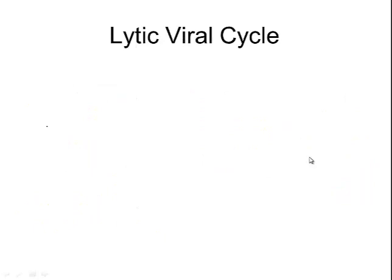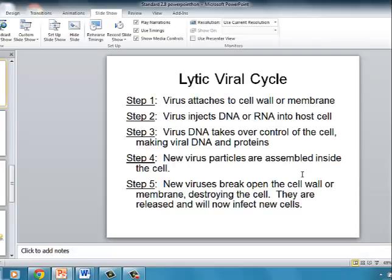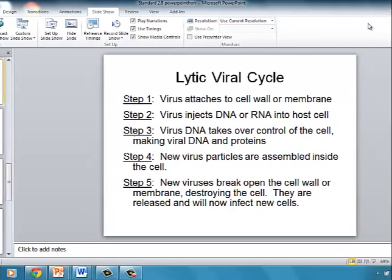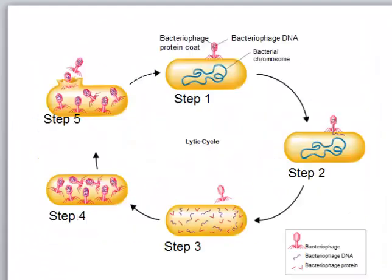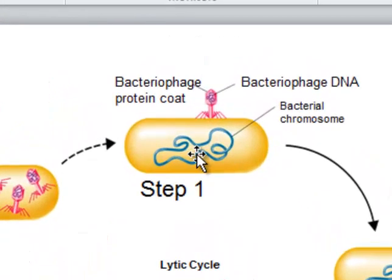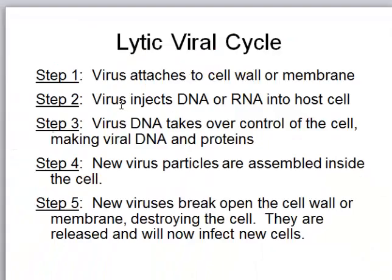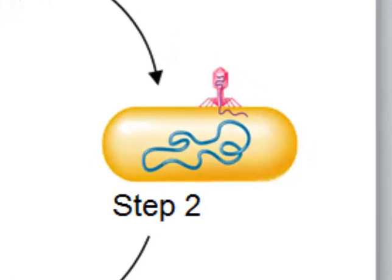There are two basic ways that a virus can attack a cell. In the lytic viral cycle, the first thing that happens is the virus attaches to the cell wall or membrane. Here is a little tiny bacteriophage attaching to the outside of a bacterial cell — you can see how much smaller it is than even a small bacterium. Step two: the virus injects its DNA or RNA into the host cell. The protein shell stays on the outside, and just that little piece of DNA or RNA goes in.